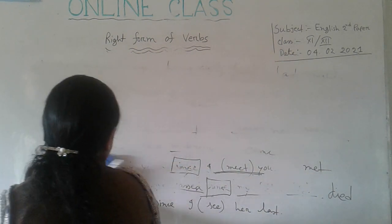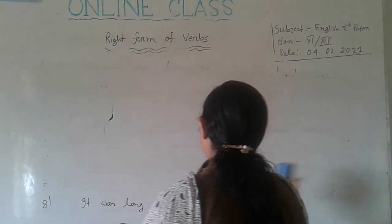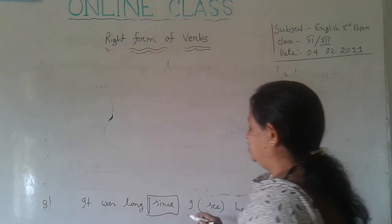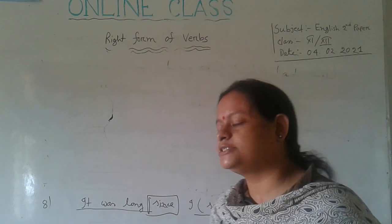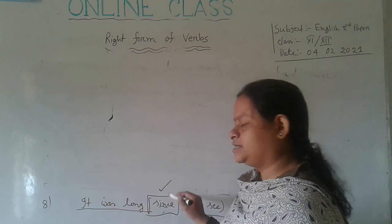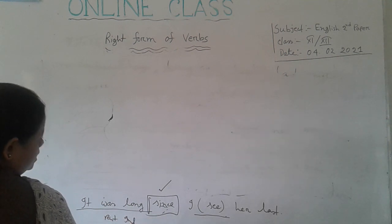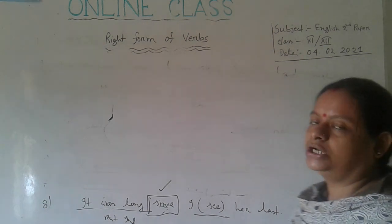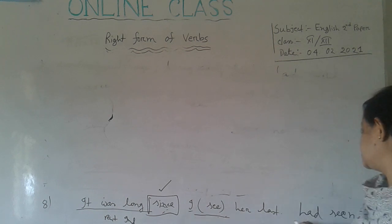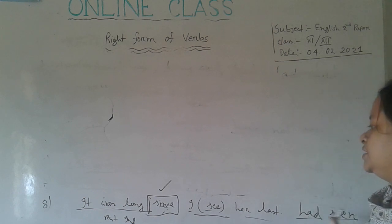Number eight: 'It was long since I had seen her last.' There is another rule for 'since': if there is a past indefinite tense before the word 'since,' we use past perfect tense after 'since.' Here 'was' is past indefinite tense, so we use past perfect tense. The right form of verb is 'had seen.' The structure of past perfect tense is: Subject + had + past participle of the main verb + object. So: 'It was long since I had seen her last.'